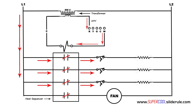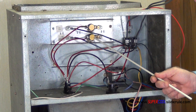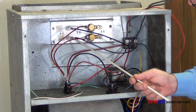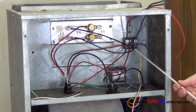It also supplies the fan motor. The electricity travels through the limit switch here, then it travels through the heating element, and completes the circuit by returning to the incoming line voltage of the terminal block.